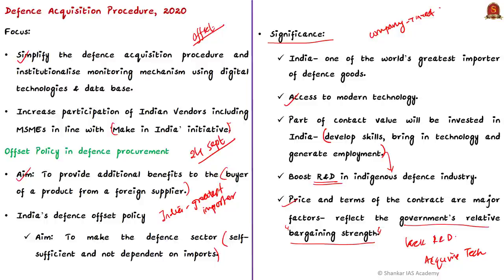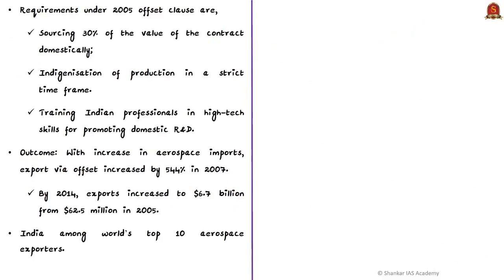Simply put, since India spends billions on defense imports, the offset clause mandates foreign suppliers to source some material from India, train local industries, or provide technology transfer — thereby developing local industries. In India, the offset clause was initiated in 2005. Requirements include sourcing 30% of the contract value domestically, indigenization of production in a strict time frame, and training Indian professionals in high-tech skills for promoting domestic R&D. For contracts valued more than 300 crores, 30% will result in offsets.